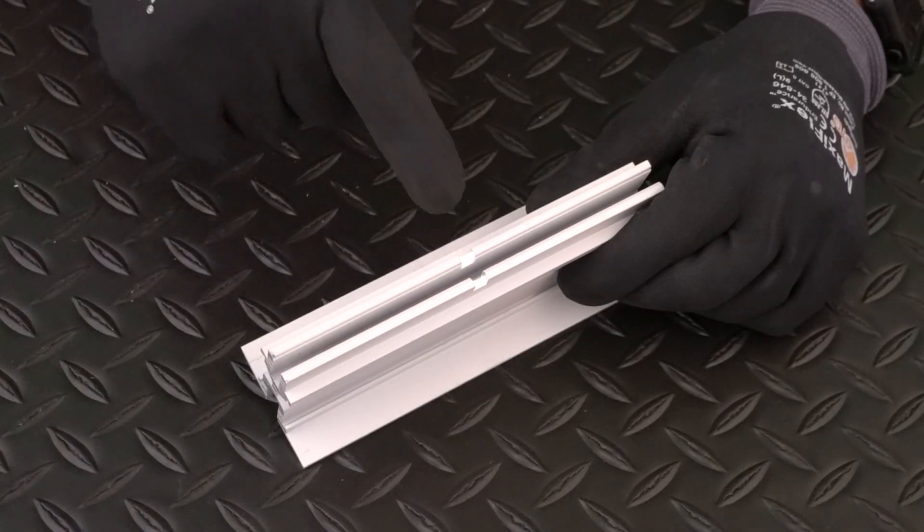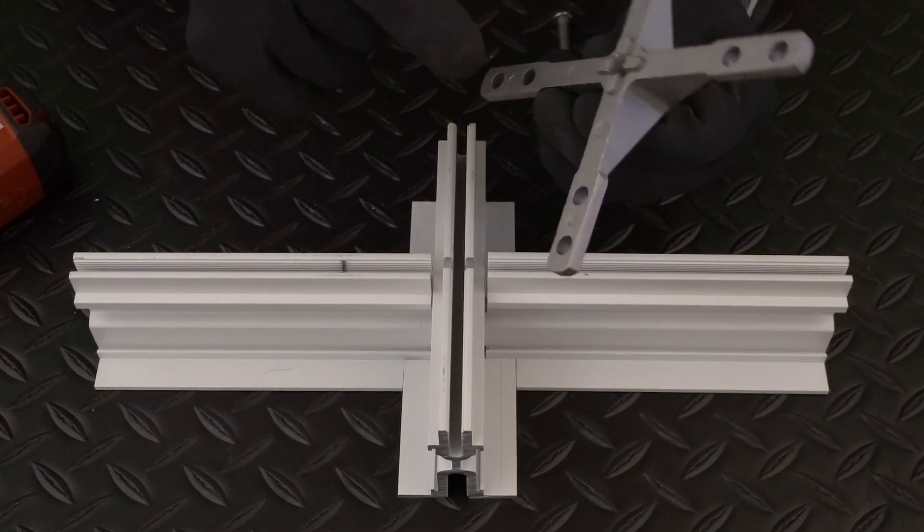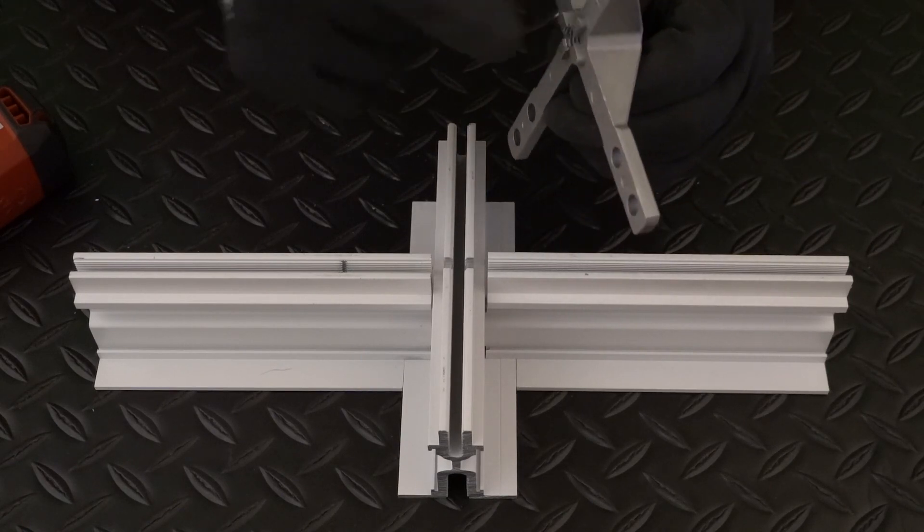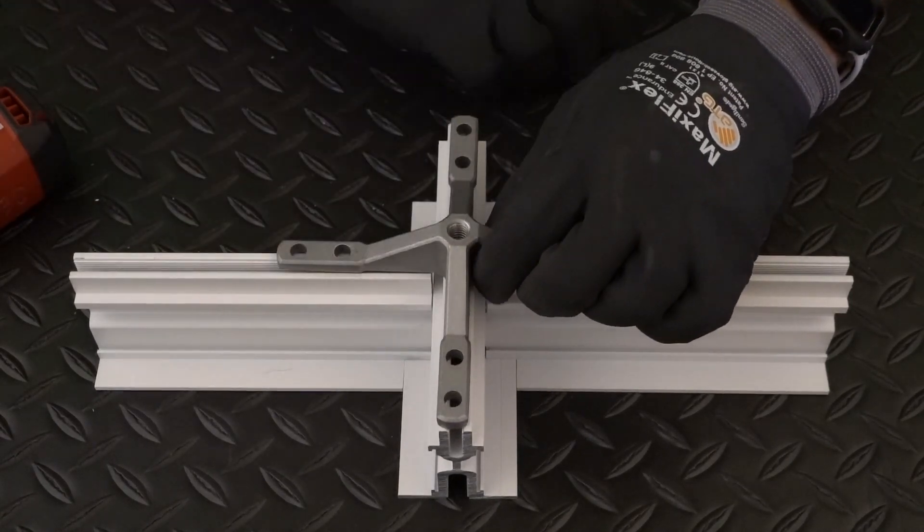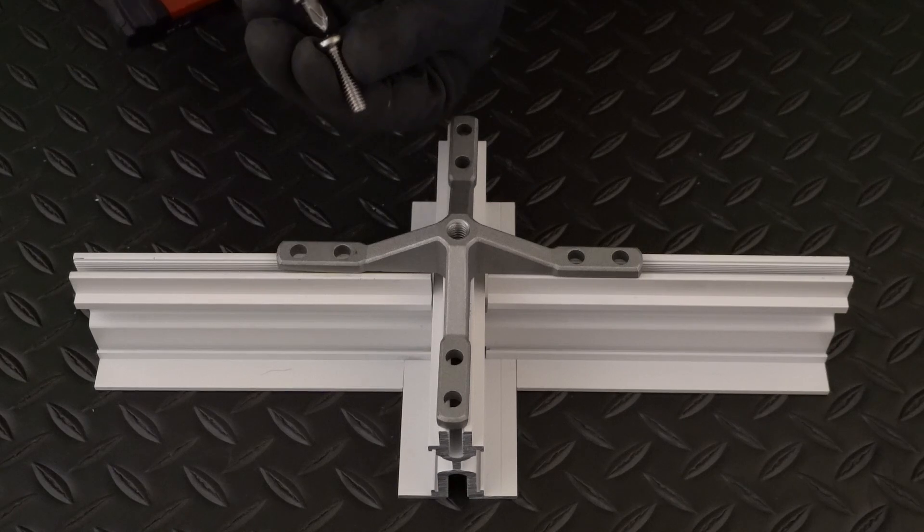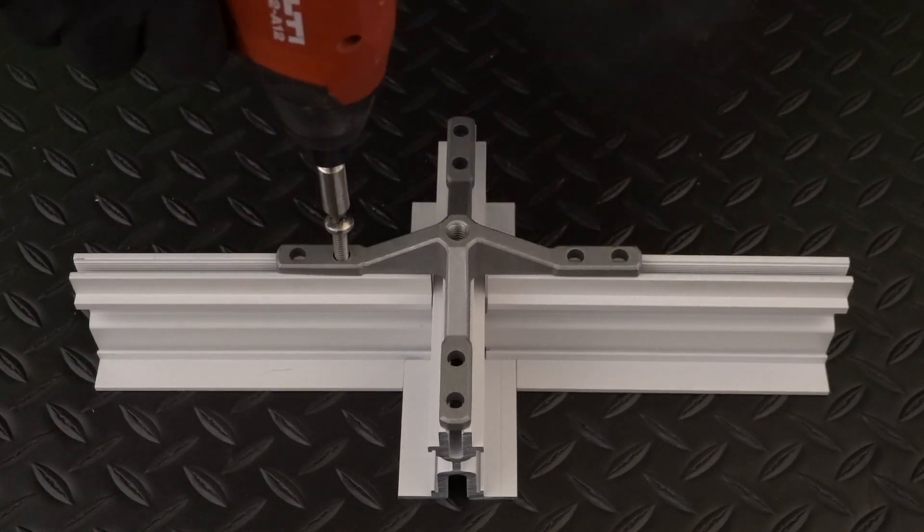The self squaring 2 foot on center ribs in the mains combined with the nubs in the brackets really help to self square and speed up ladder production without the need for an aligning jig setup on the table.